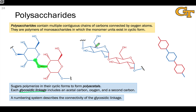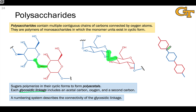You'll also often see chair forms drawn like this, and in this drawing we find the glycosidic linkage right here. You'll sometimes also see this stylistic representation of polysaccharides, just with a hexagon for every monosaccharide unit — no stereochemistry, no atoms are really even drawn, and the glycosidic linkage is implied by the lines between the hexagons.